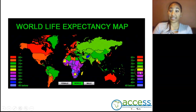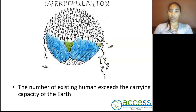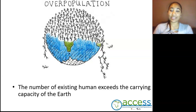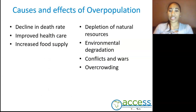So what happens when there are too many people in one place? Well, we have what is called overpopulation. This is the number of existing humans which exceeds the carrying capacity of the earth. It doesn't mean we're going to fall off the earth, but it does spell danger for our environment as well as our natural resources used to sustain ourselves. The causes are decline in death rates, improved healthcare, and increased food supply. And the effects of this are a depletion of natural resources, environmental degradation, conflicts and war, and overcrowding.